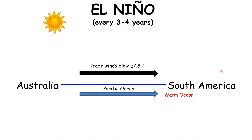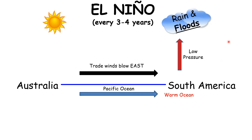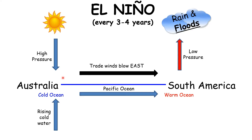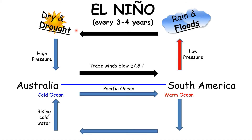With the warm ocean, air above it will rise, creating clouds, rain, and floods within South America. Meanwhile, as the surface waters of the Pacific Ocean have been moved to the east, cold water is sucked up from deep in the ocean, giving a cold ocean next to Australia. With the cold ocean there is cooler air above it, giving high pressure, sinking air, and drought and very dry conditions within Australia. These convection cells then loop back to where they started. That is El Niño, and it occurs every three to four years.